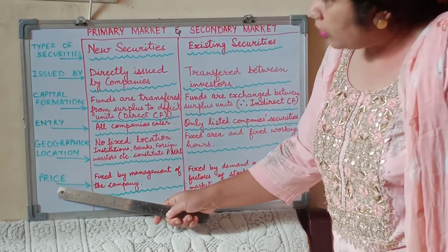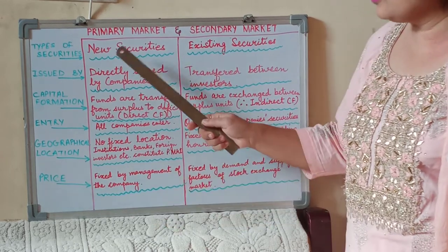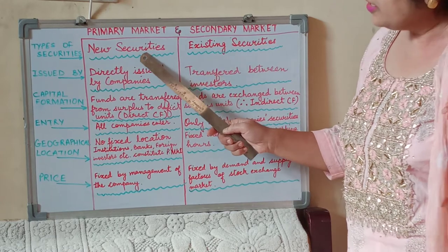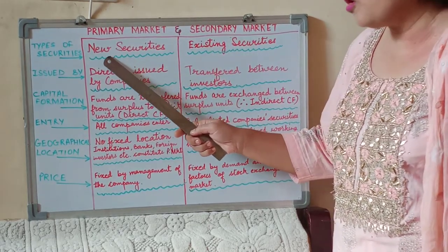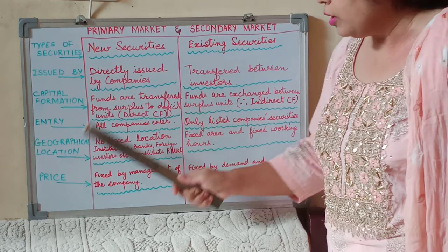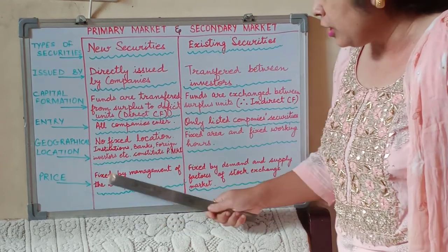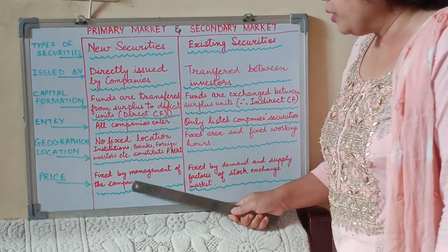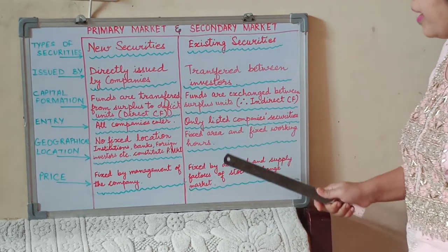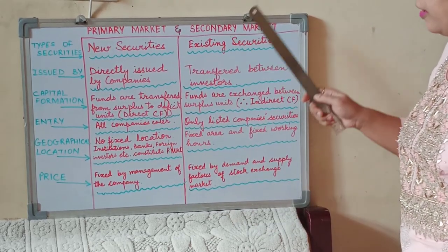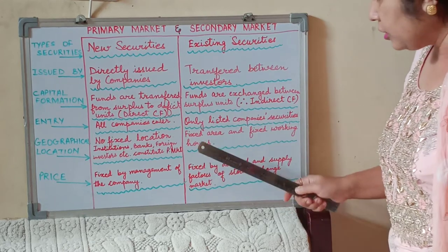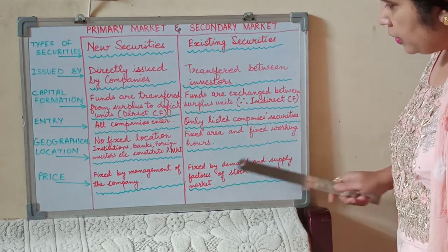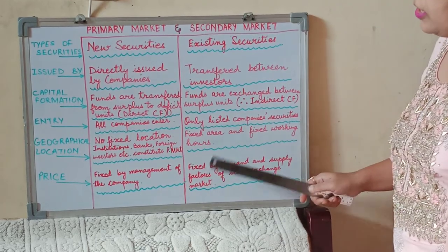The next basis is price. Since the securities are floated for the first time in the primary market, they are all new securities being issued. Therefore, the price is initially fixed by the management of the company. Once they come into existence and are demanded by investors, they reach the secondary market and the stock exchanges, where prices are fixed by the forces of demand and supply of the stock exchange market.